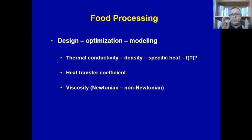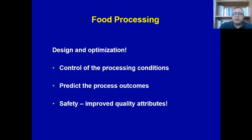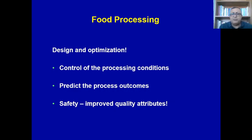Based on all these examples, design, optimization, and modeling are significant issues to successfully scale an innovative process — otherwise we will have temperature non-uniformity problems. For all these cases, we need the thermophysical properties of the product as a function of temperature, and we need the heat transfer coefficient especially for conventional cases. For innovative processes, we also need the dielectric properties as a function of temperature, product composition, and frequency — changing from 915 MHz to higher frequencies, or from microwave to RF energy. When we have a mathematically validated model, we can perform design optimization for better process control, to achieve the desired process outcome along with safety and quality attributes.